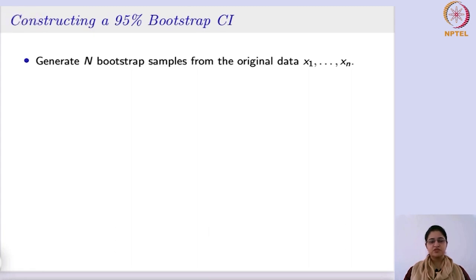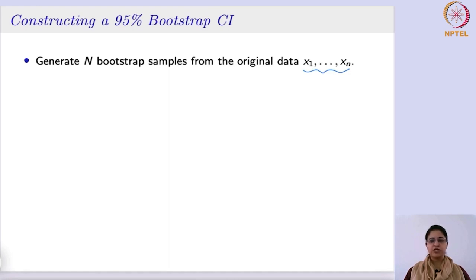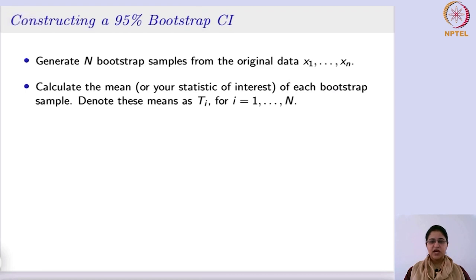Suppose we want to construct a 95% bootstrap confidence interval. We have the original sample, and from it we will draw n bootstrap samples — that is, we take different samples from this given data with replacement. Whatever observations are there, we note them, put them back, and select again. We perform this n times, and each time we take a bootstrap sample we calculate the mean. If you are interested in the sample mean, you calculate the mean; if in variance or median, you do likewise.